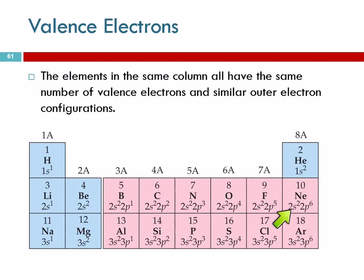Look at neon: 2s2, 2p6. Argon is 3s2, 3p6. How many valence electrons does it have? 2 plus 6 is 8. It's in group 8A. These guys have 7, they're in group 7A. These guys have 6, they're in group 6A. Look over here. 2A. 2 valence electrons.